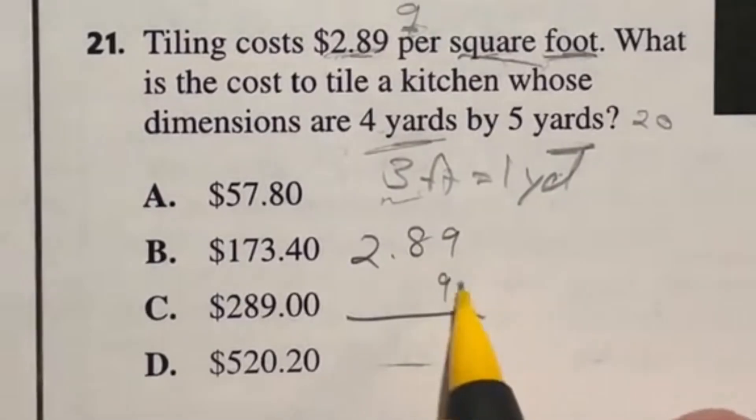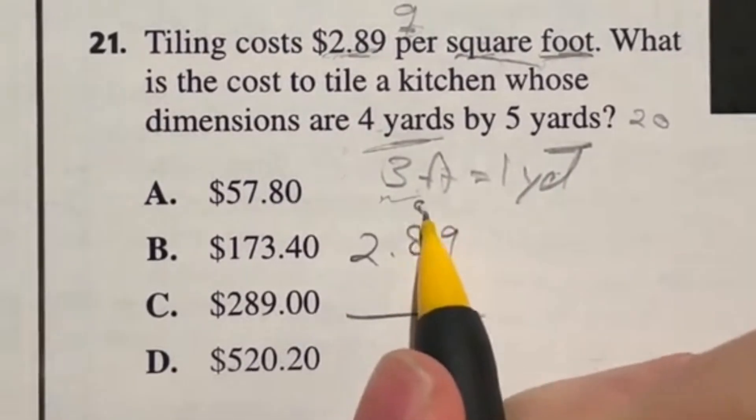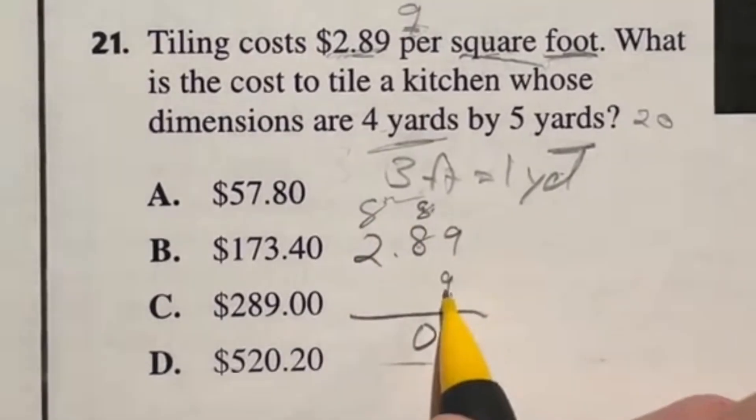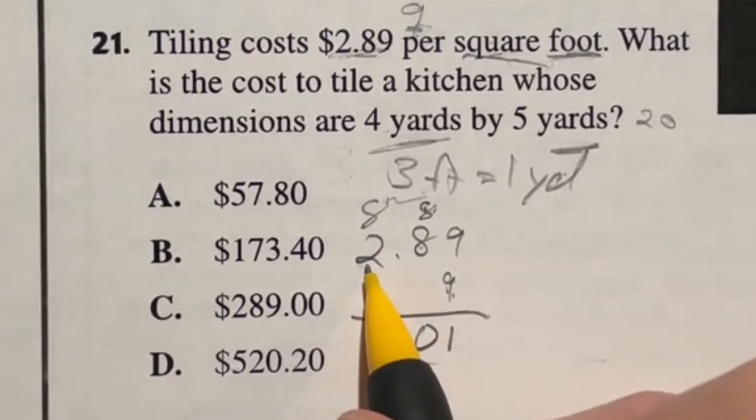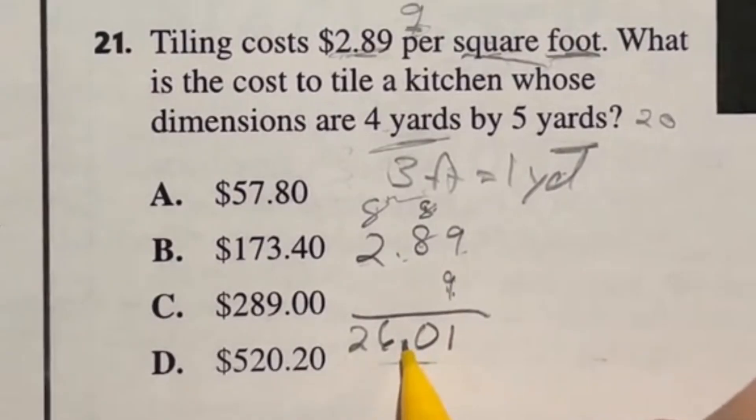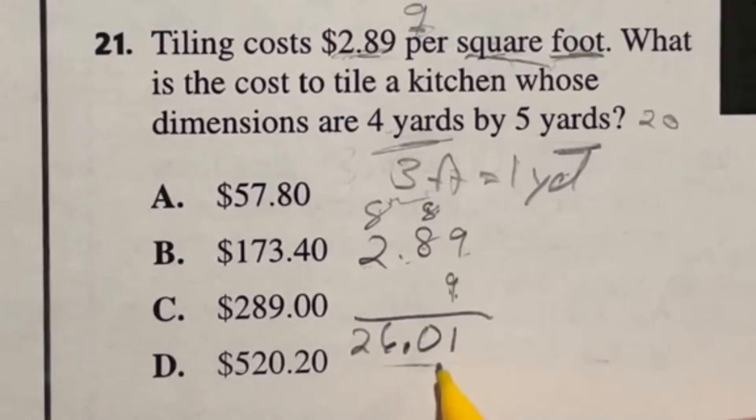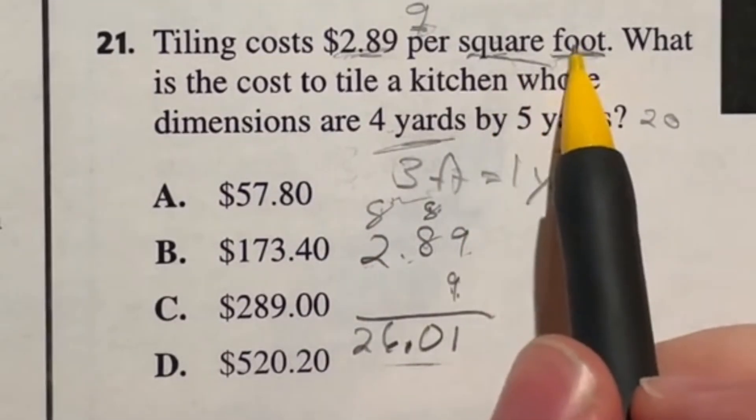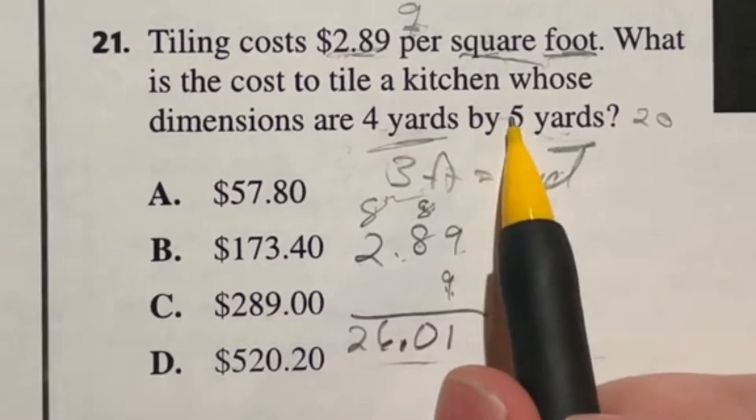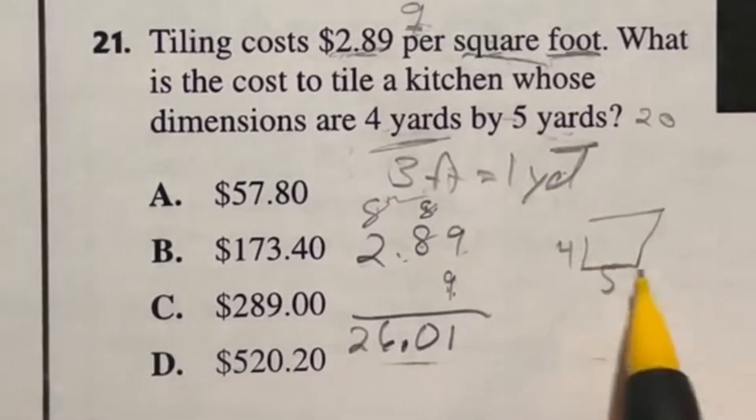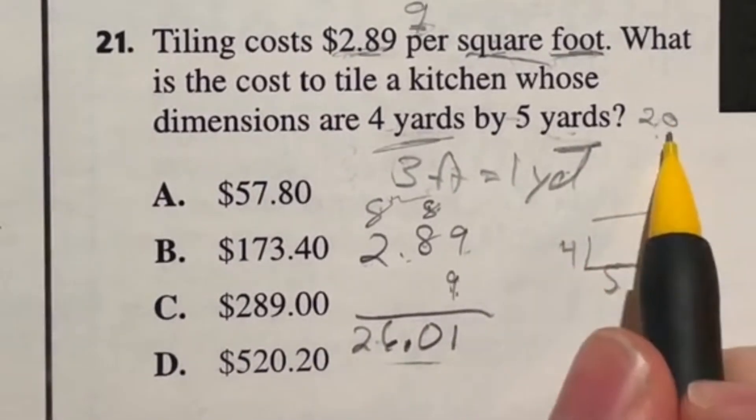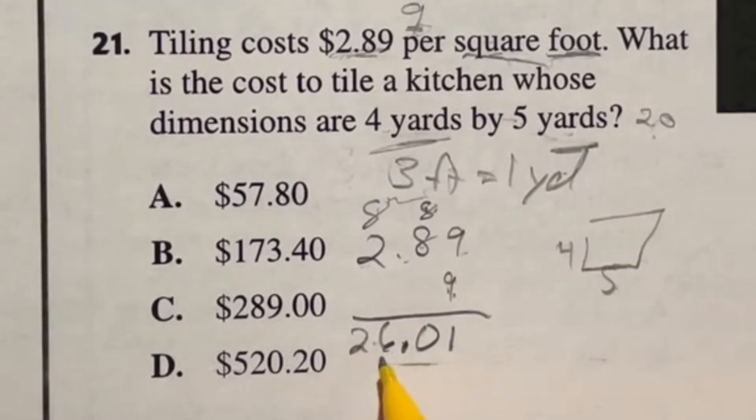So we could either multiply this by nine and then take that answer and multiply it by the four times five, which is going to be the dimension of that kitchen. So let's just make this into square yards instead. We multiply this by nine. What is 289 times nine? Nine times nine is 81, carry the eight. Nine times eight is 72 plus eight is 80. Nine times two is 18 plus eight is 26, and two decimal places gives us 26.01 per square yard.